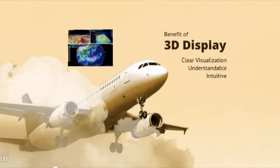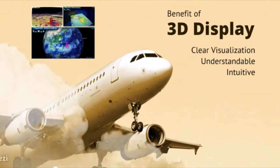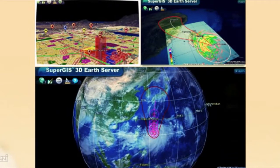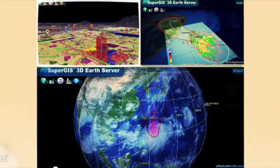In a 3D view, it is easier for you and your audiences to understand the geographic patterns and trends of the GIS data. For example, you can show the land use data and display them in 3D to represent a virtual city, or you can show some large-scale data like Typhoon.